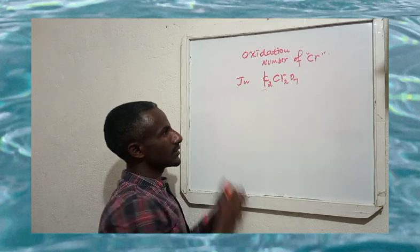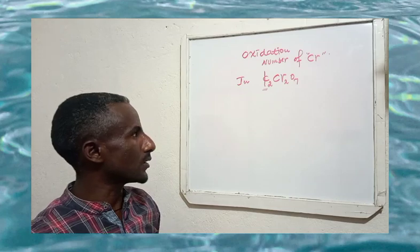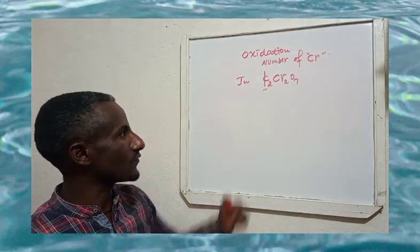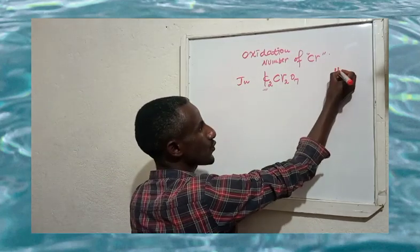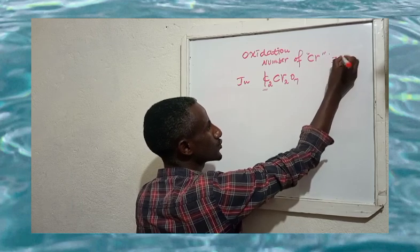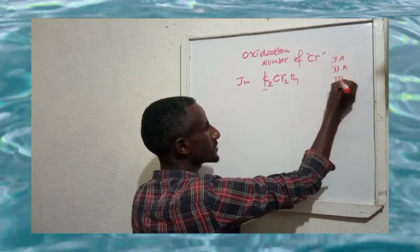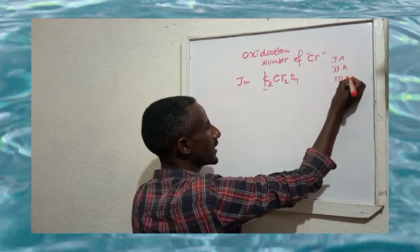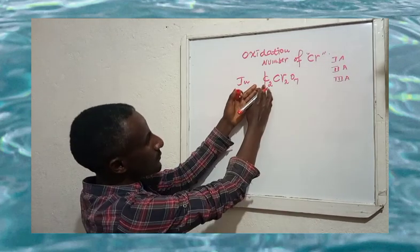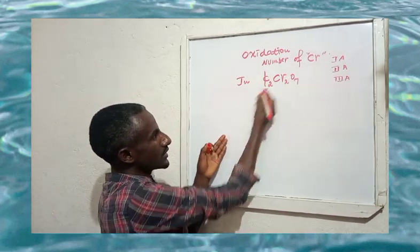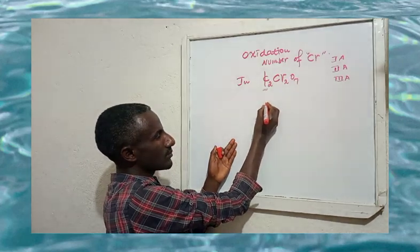First, group one and group two metals have fixed oxidation numbers. Oxygen has oxidation number minus two. Potassium is a group one metal, so we use that rule. Let's find the oxidation number of chromium.